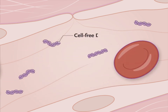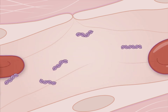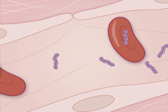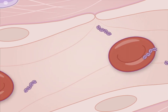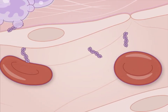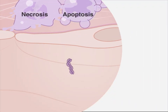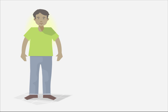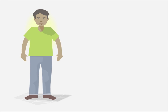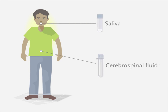Circulating cell-free DNA is fragmented DNA released into the bloodstream following cellular apoptosis or necrosis, and can be found in low levels in plasma in healthy individuals, as well as in other bodily fluids such as saliva, cerebrospinal fluid, and urine.